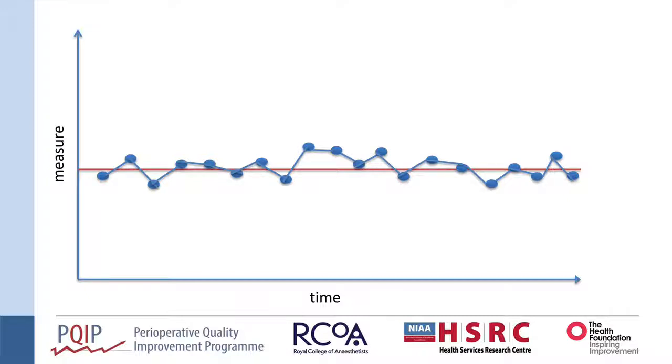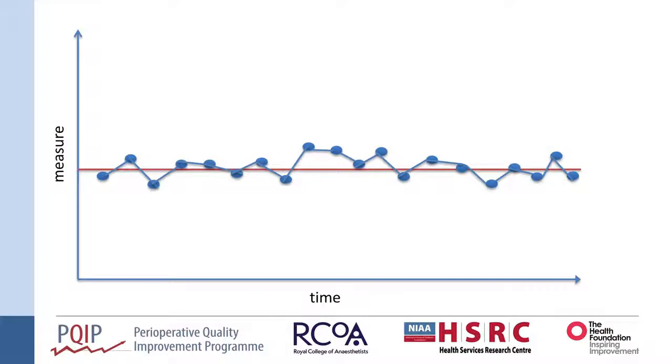This is the absolute key of run charts — they're about showing if there are any non-random patterns to your data. You might have done something to improve, or something has happened to your system that you might not know about. Once you've plotted your median line, carry on collecting data — the more you collect, the more powerful your run chart becomes. Whenever you're making a change, make sure you annotate it on your run chart so you can always look back and see what happened when.